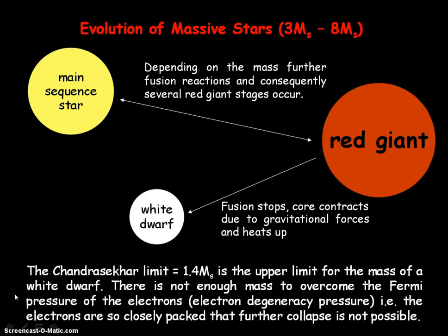The Chandrasekhar limit sets the upper limit for the mass of a white dwarf, equal to 1.4 solar masses. Stars with an initial mass up to eight solar masses do not have enough mass to overcome what's called the Fermi pressure of the electrons, also known as the electron degeneracy pressure — the electrons are so closely packed that further collapse is not possible.